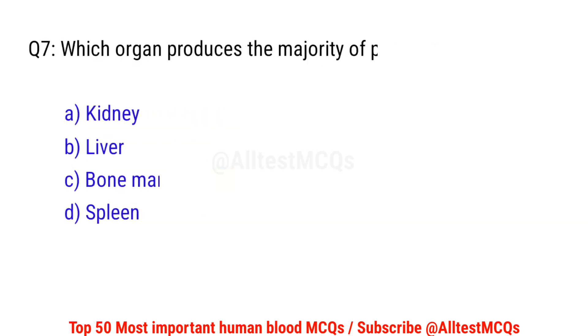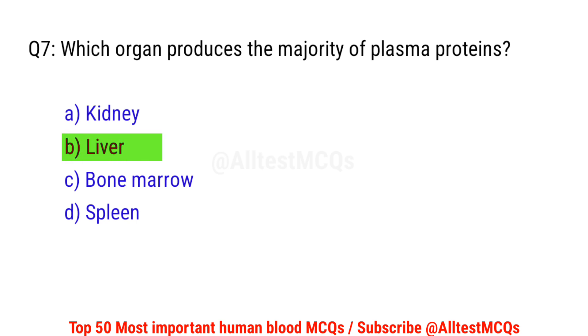Question number 7. Which organ produces the majority of plasma proteins? Correct option is B. Liver.